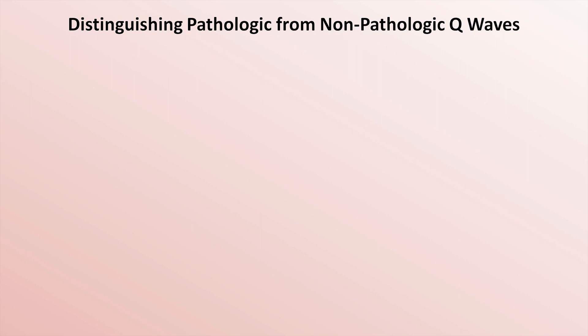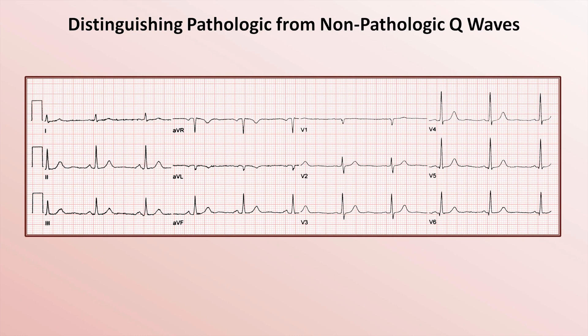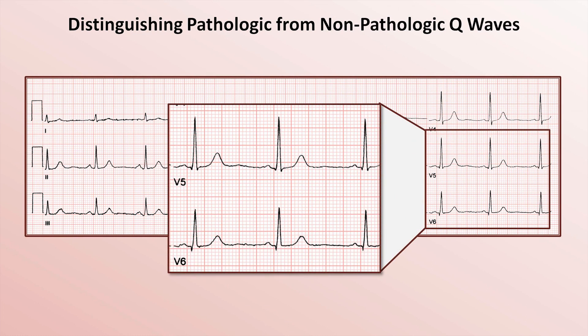Here's an example of a normal EKG. If we zoom in on leads V5 and V6, we can see the tiny downward deflections at the beginning of the QRS complexes. These are septal Q-waves.